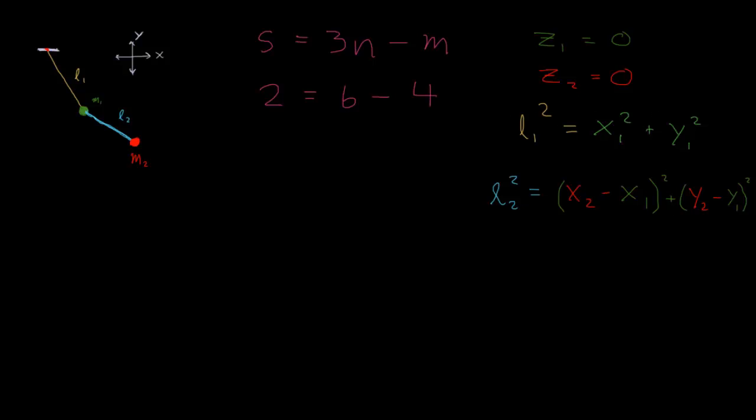Since we see that these are equations of circles, it might not be a bad idea to choose polar coordinates and use theta—theta one for this pendulum and theta two for this pendulum as our generalized coordinates. There's not just one set way to find the best generalized coordinates. You have to look at the symmetry of the system, look at the equations, and see what might work best. Here we're going to use theta one, this angle right here, and theta two, this angle right here.